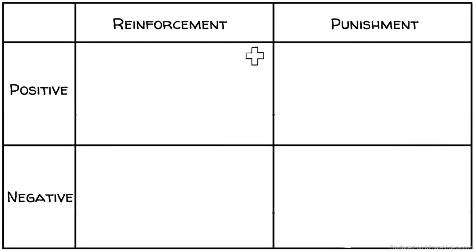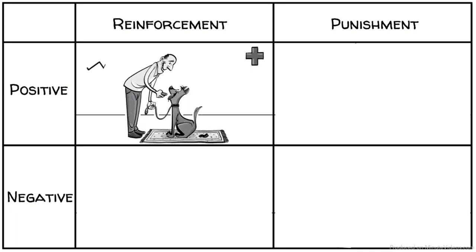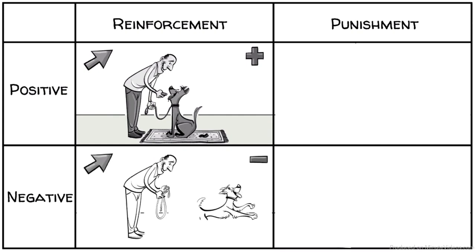We can draw the four options in a table. If reinforcement is positive, we add something pleasant, like a cookie, to increase the likelihood of a behavior. If reinforcement is negative, we still want to increase the desired behavior, this time by removing something unpleasant, like the leash.